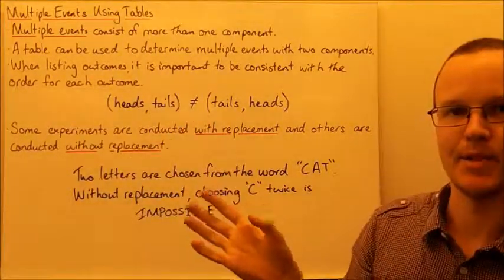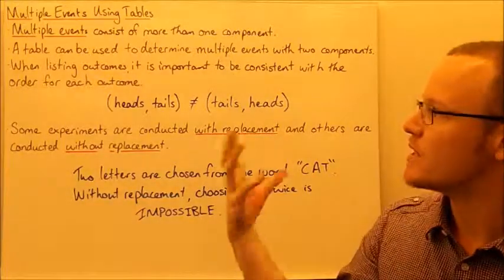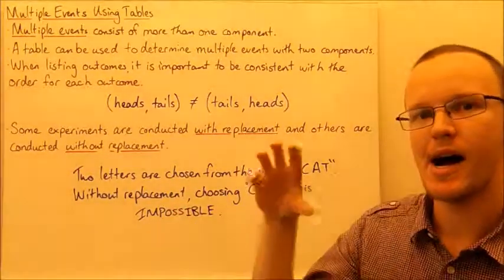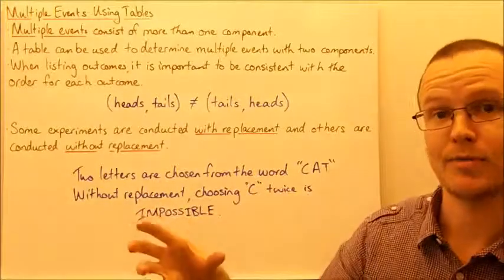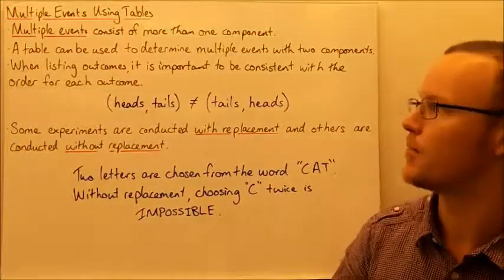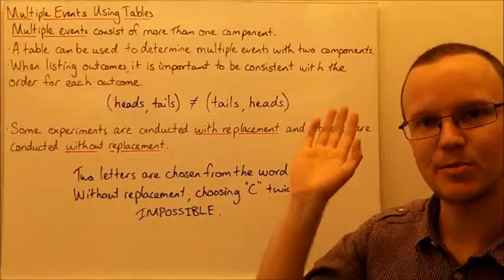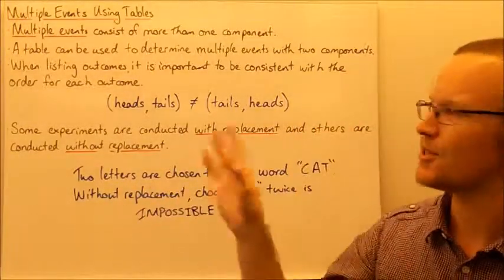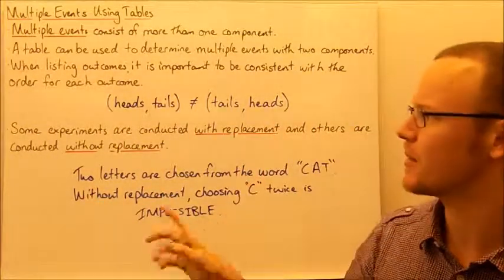When listing outcomes, we need to show what the outcome of the first component is and the outcome of the second component. It's important to be consistent with the order, always going first component, then second component.